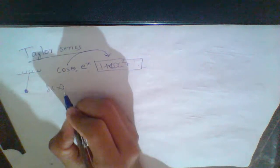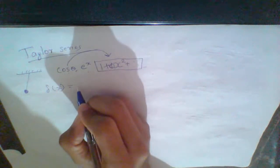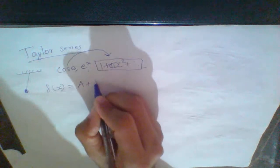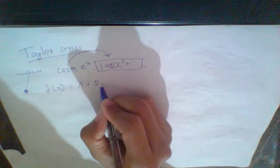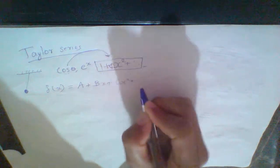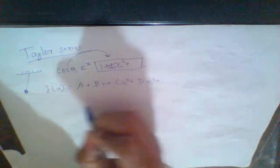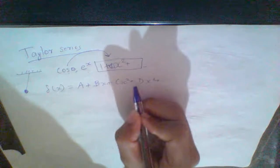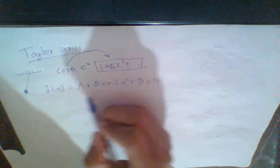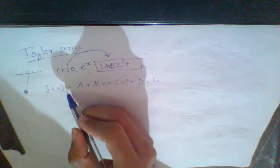We use f of x. We use a again. I have a polynomial: a plus b times x plus c times x squared. If we have x, we can match any function with this polynomial.